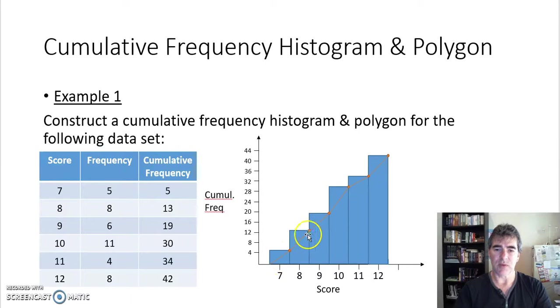And this cumulative frequency polygon is also called an ogive, so sometimes you'll hear that terminology. But most of the time you'll hear cumulative frequency histogram for the columns and cumulative frequency polygon for the line graph.